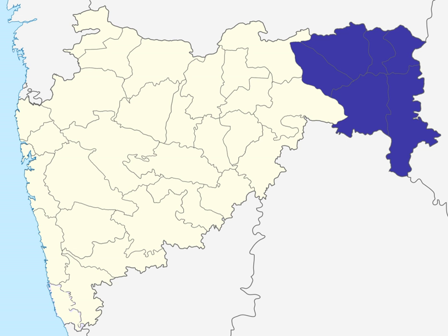Nagpur Division was created in 1861, when the Central Province's administrative division of British India was created by merging the Nagpur Province and the Saghur and Nirbhuda territories. Before 1861, Nagpur Division had been part of Nagpur Province, which had been created after the Nagpur Kingdom was annexed by the British in 1853 by means of the Doctrine of Lapse.